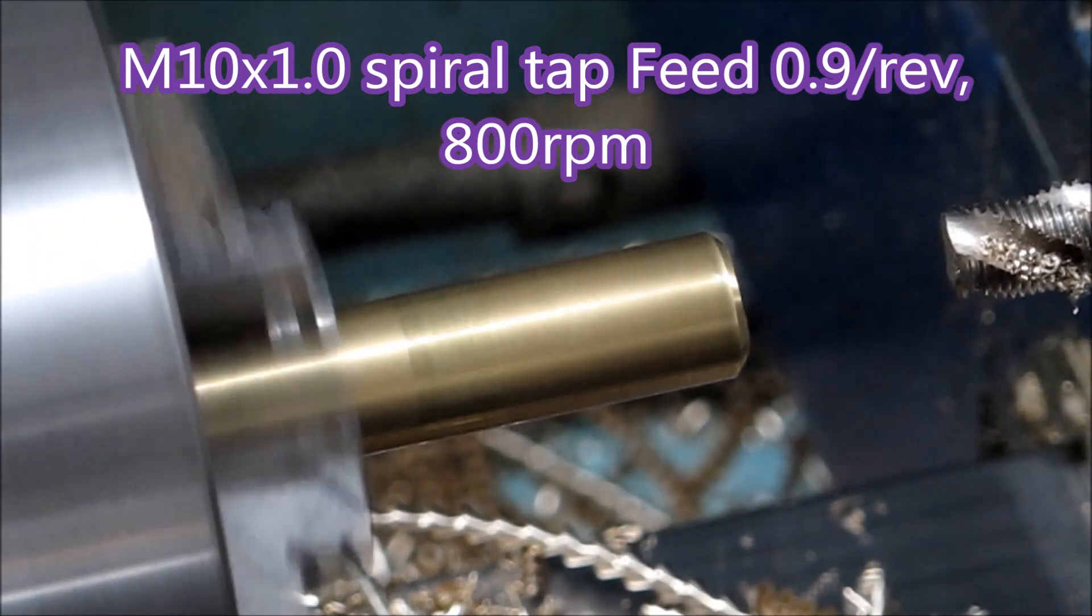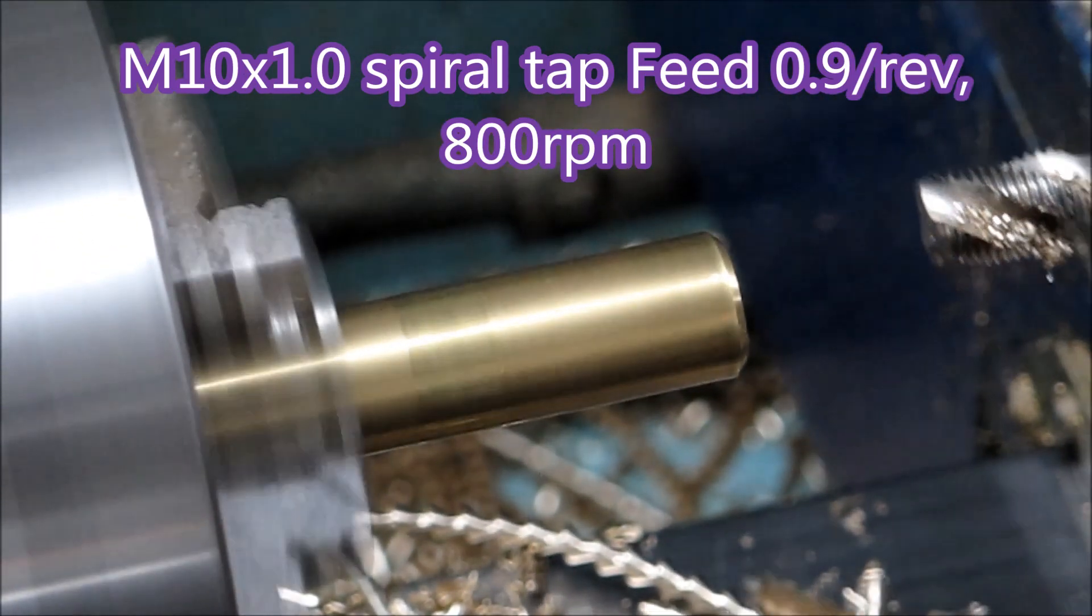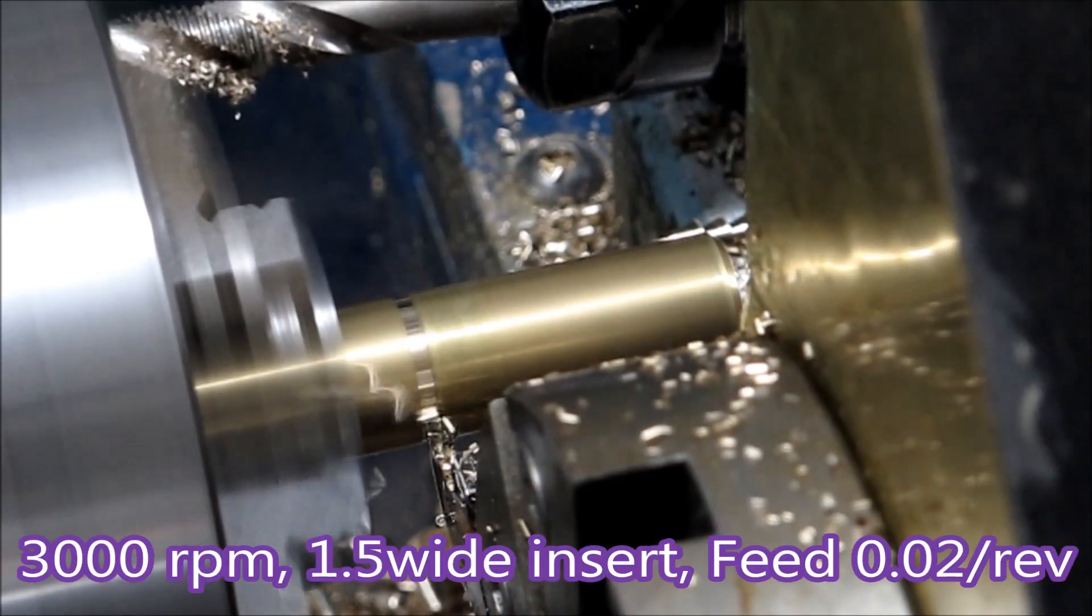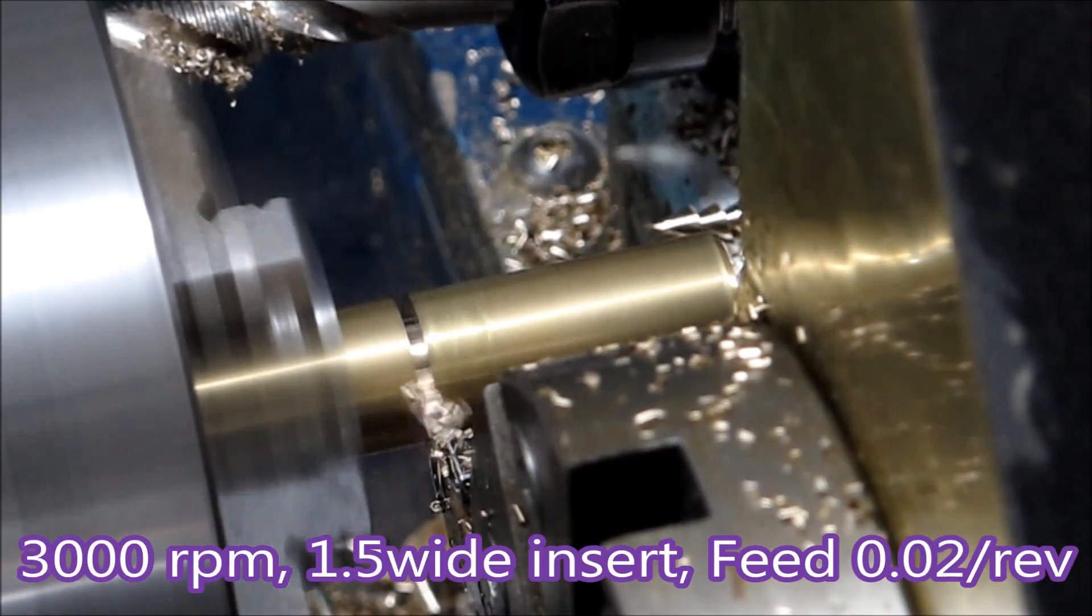Here's the tap, 800 RPM. Here's the feed of 0.9 so the floating tap head could do its work.